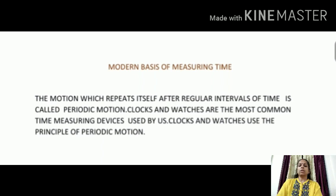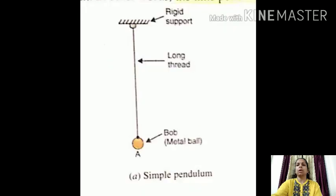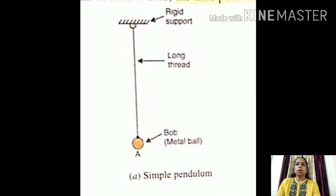A motion which repeats itself at regular intervals of time is called periodic motion. The working of clocks is rather complex, but all of them make use of some periodic motion. Clocks and watches are the most common time measuring devices used by us, and they use the principle of periodic motion. One of the most well known examples of periodic motion is that of a simple pendulum.